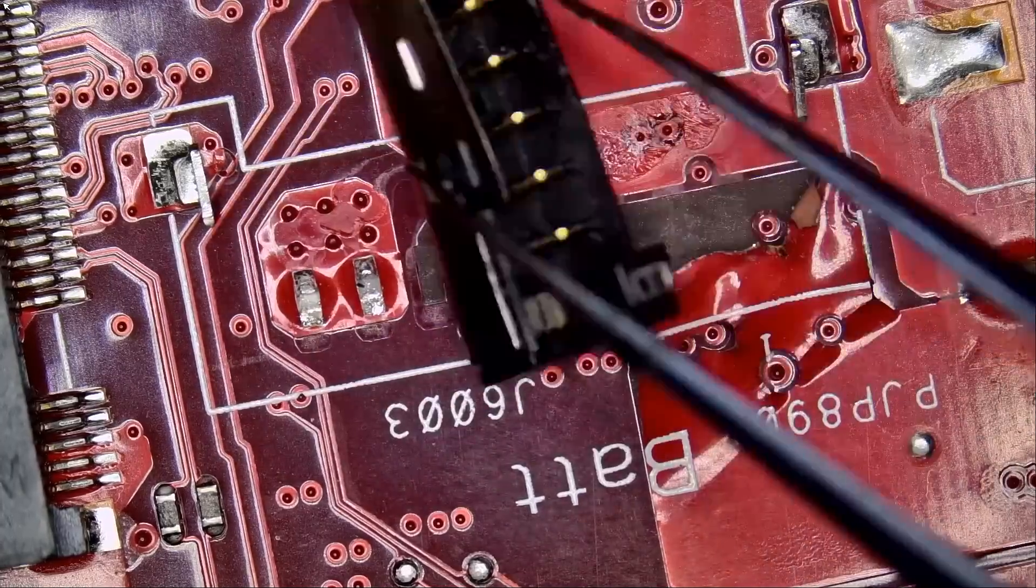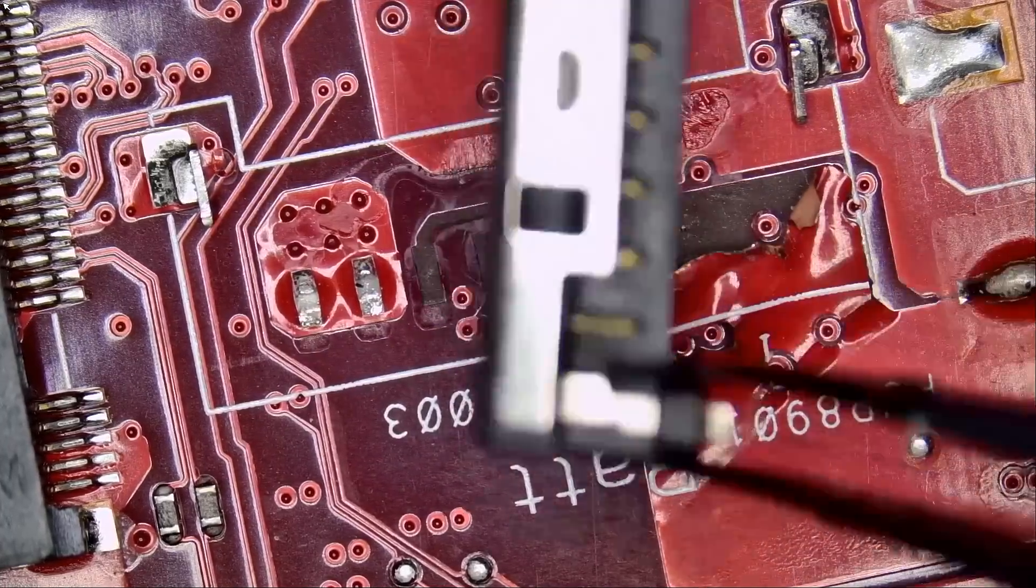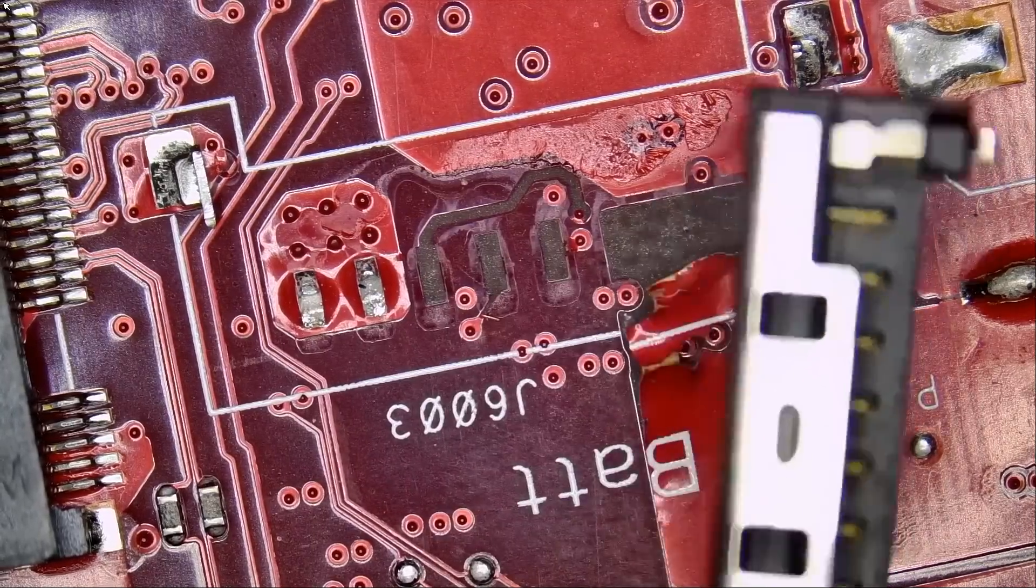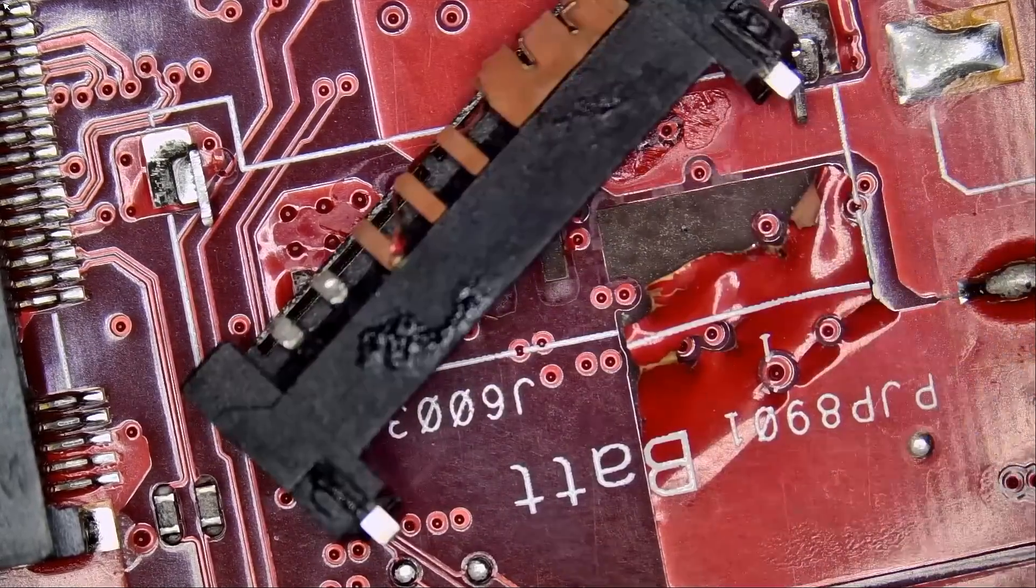If we flip the connector, we see how many ripped pads. We can tell by looking at the board here: one, two, three, and one, two, three. We have six ripped pads.